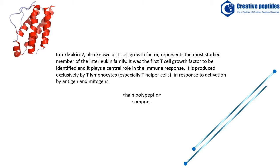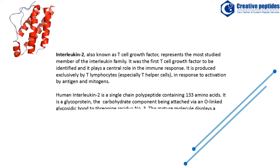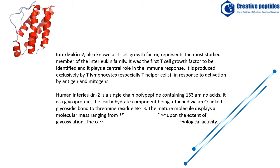Human interleukin-2 is a single-chain polypeptide containing 133 amino acids. It is a glycoprotein, the carbohydrate component being attached via an O-linked glycosidic bond to threonine residue number 3. The mature molecule displays a molecular mass ranging from 15–20 kDa, depending upon the extent of glycosylation. The carbohydrate moiety is not required for biological activity.